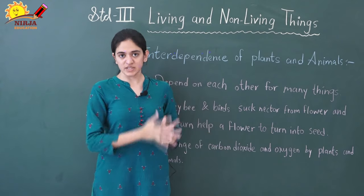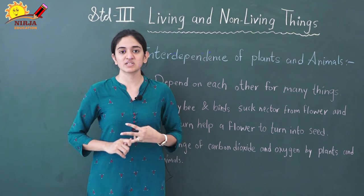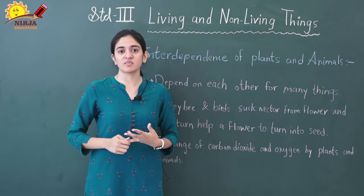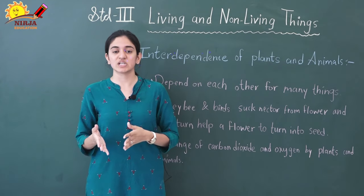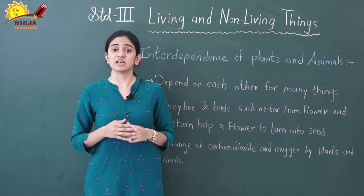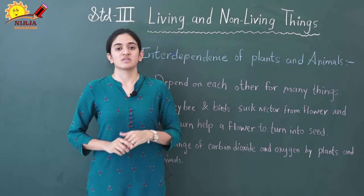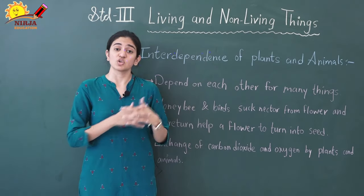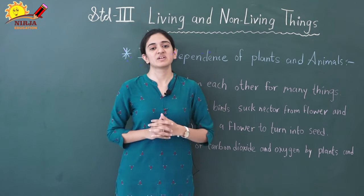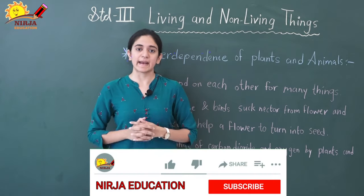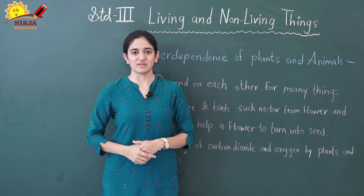This was all in this chapter. We learned about living and non-living things, the main characteristics of living things, how to differentiate living from non-living, and the interdependence of plants and animals. I hope you all understood this chapter and liked our video. Please like, share, and comment, and don't forget to subscribe to our channel and press the bell icon. Thank you.